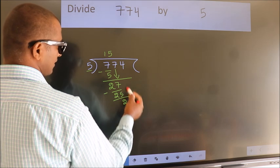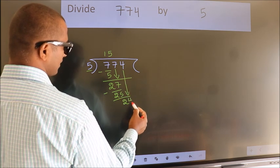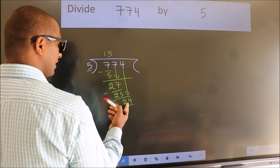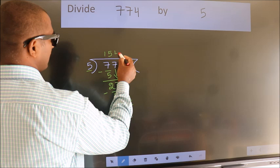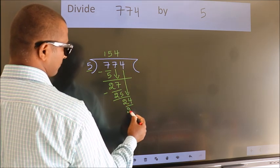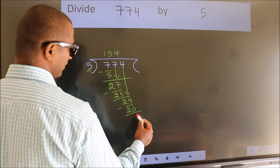After this, bring down the beside number. So 4 down, making 24. A number close to 24 in the 5 table is 5 fives 20. Now we subtract and get 4.